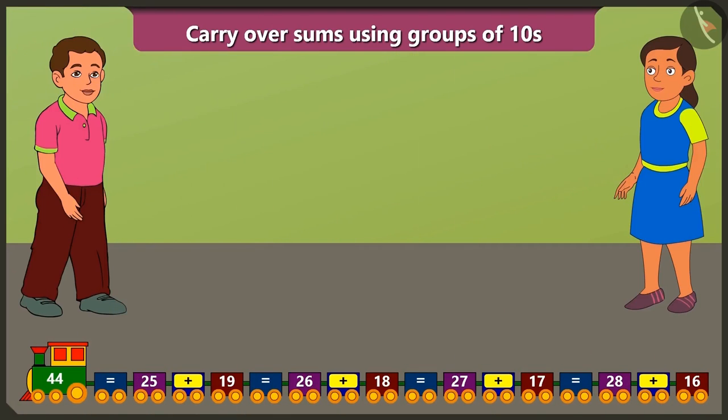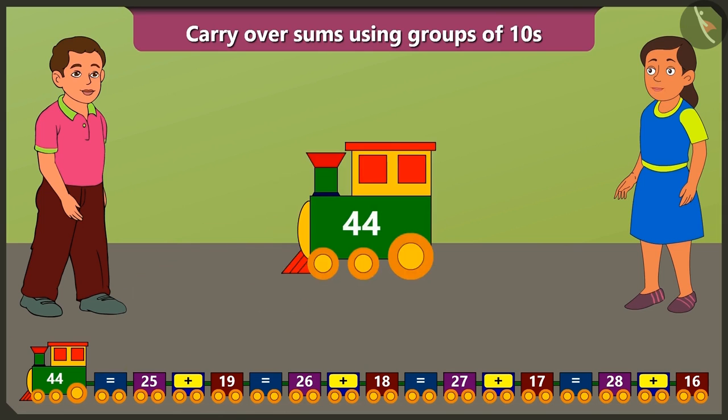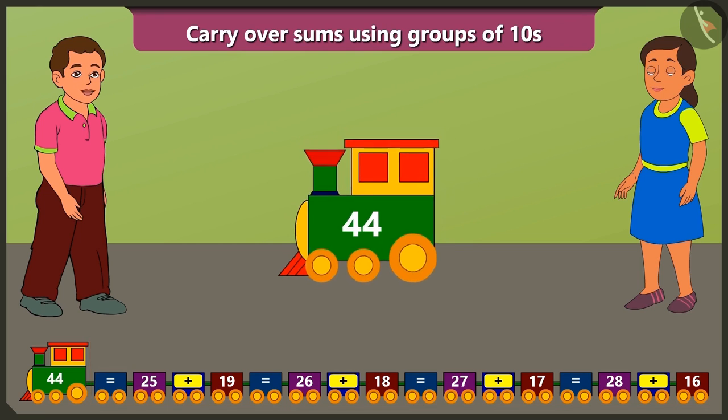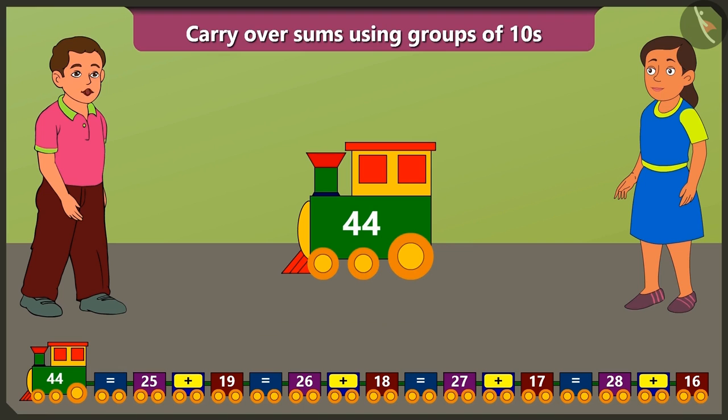Look Bubbly, what a fun train I have. Hey, but why is 44 written on the engine of your train? Because the sum of all the numbers written on the compartment of the train equals to 44. How? Let me explain.